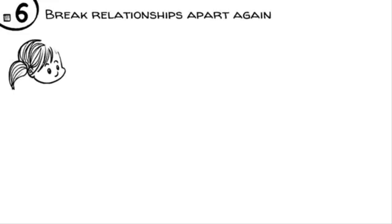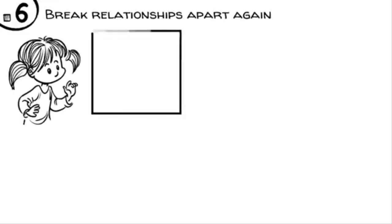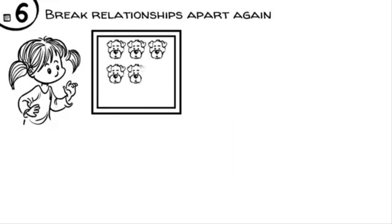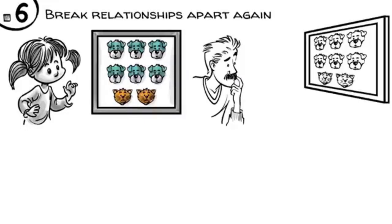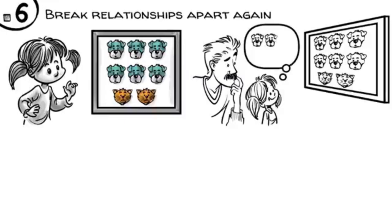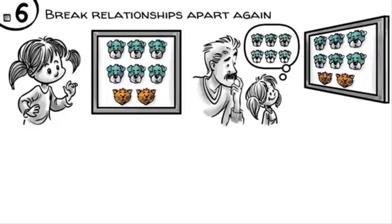After building them, children need to learn to break relationships apart again. We can see how hard this is when we present a five-year-old an image of six dogs and two cats and then ask, are there more dogs or more animals? While most adults who see the full picture find this question odd, a five-year-old typically just answers, more dogs. When you ask further, more dogs than what, the child replies, than cats.